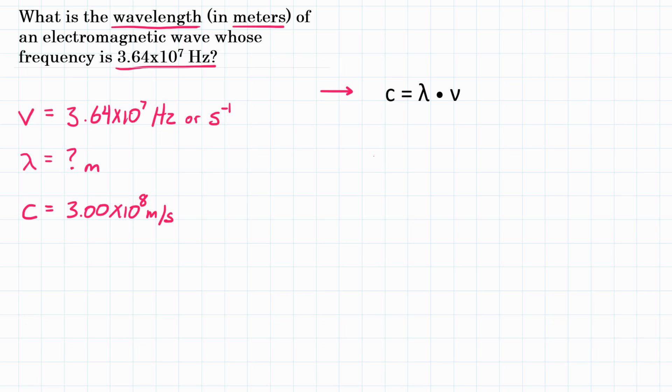We have everything we need to solve for wavelength. We need to manipulate our equation now to isolate for wavelength. We need to get it by itself. So to do that, we're going to divide both sides by frequency.